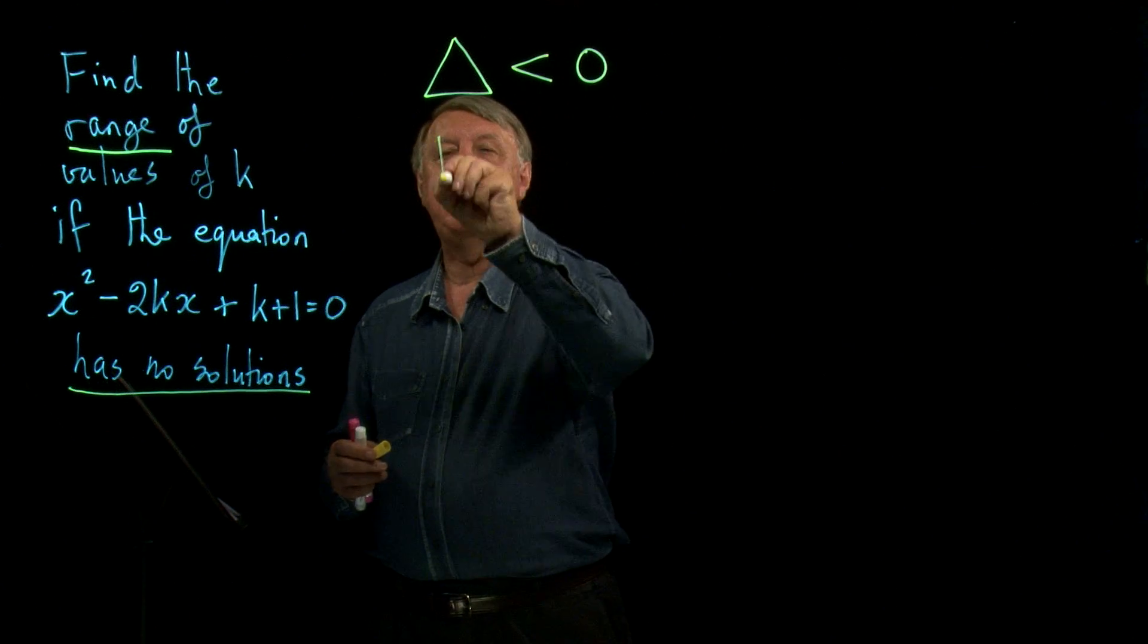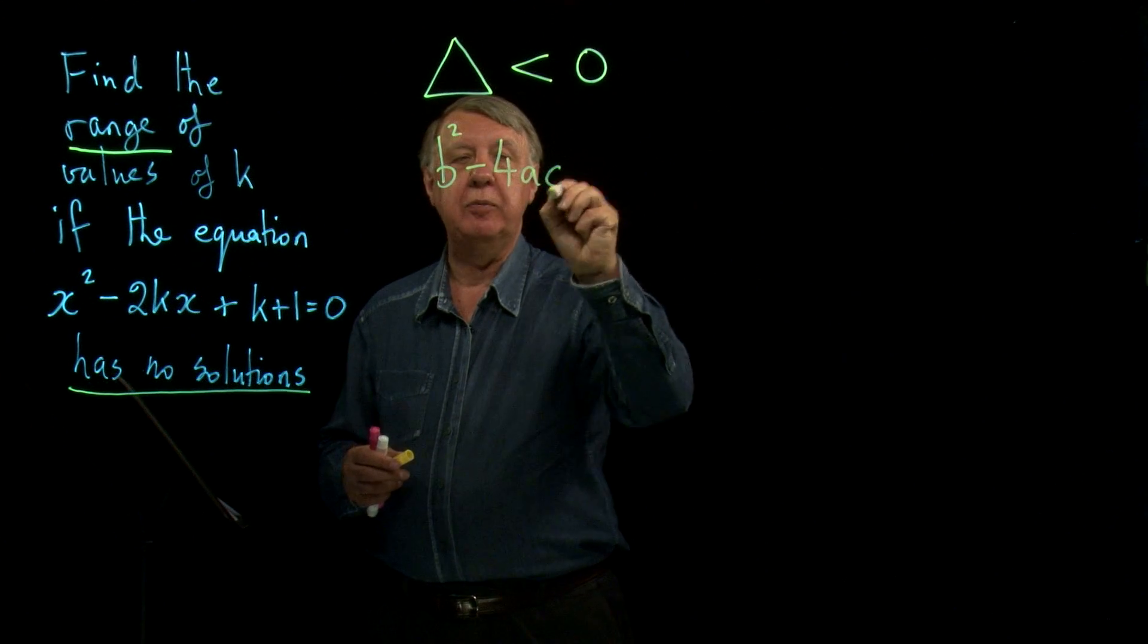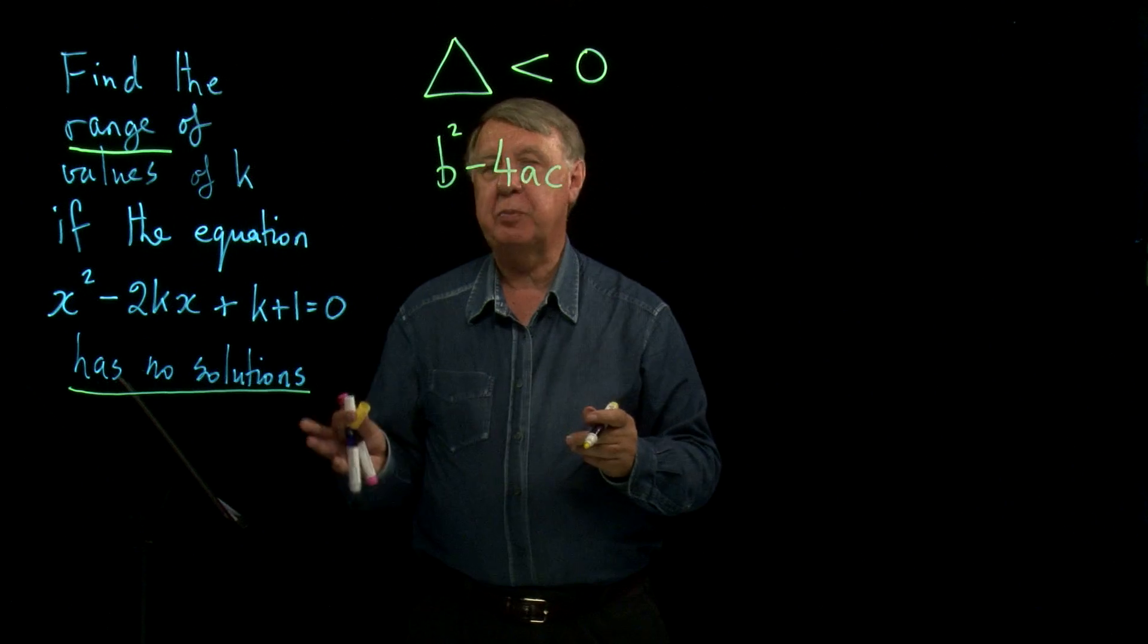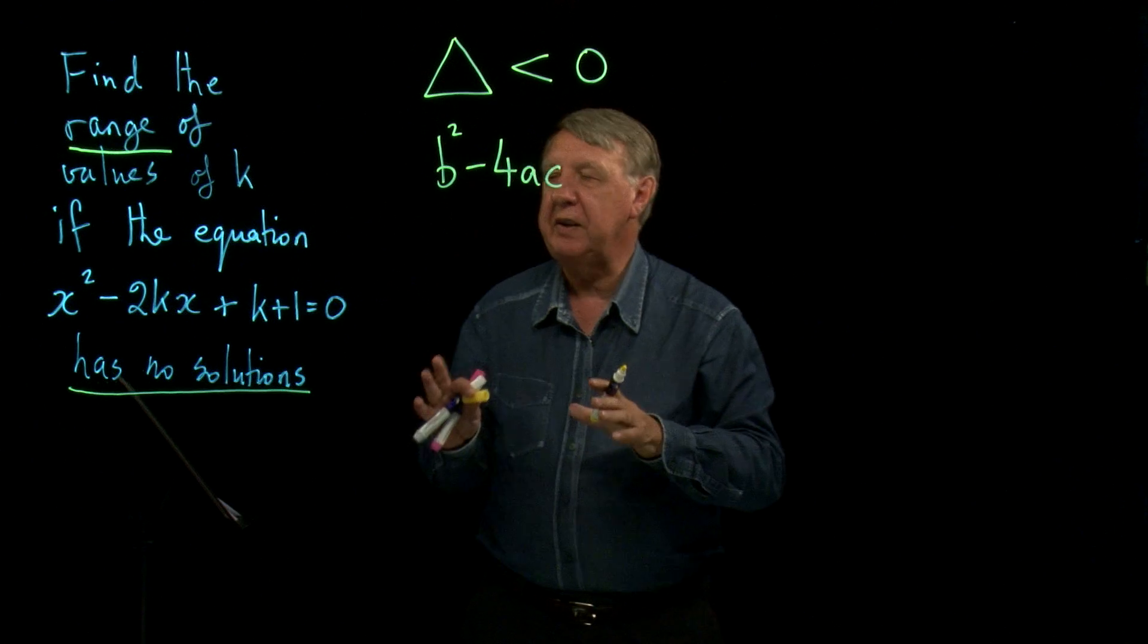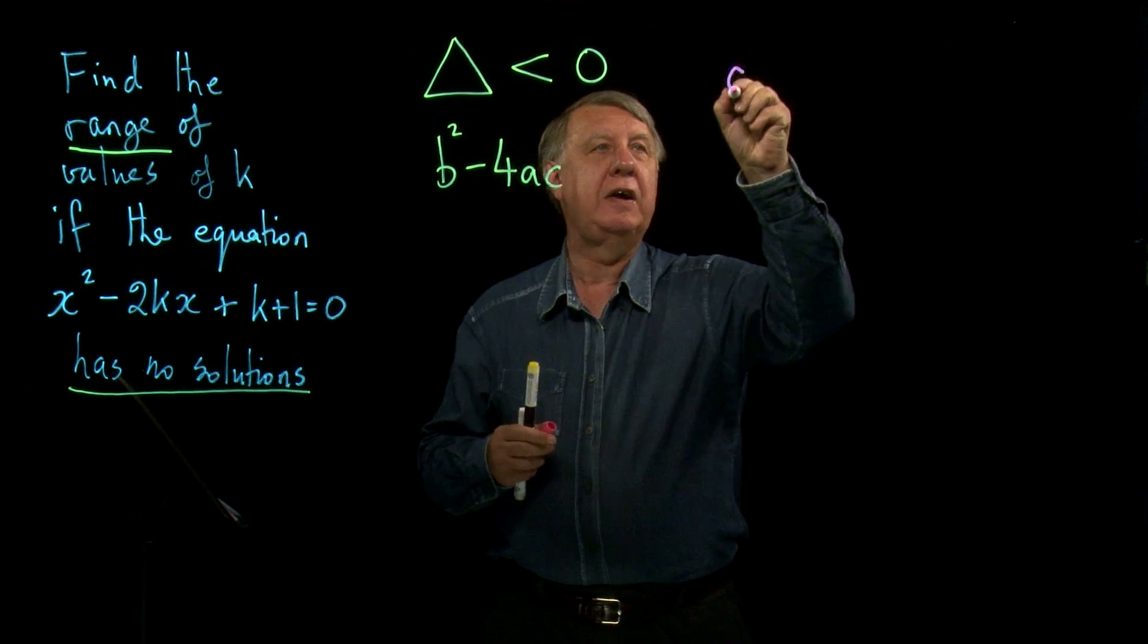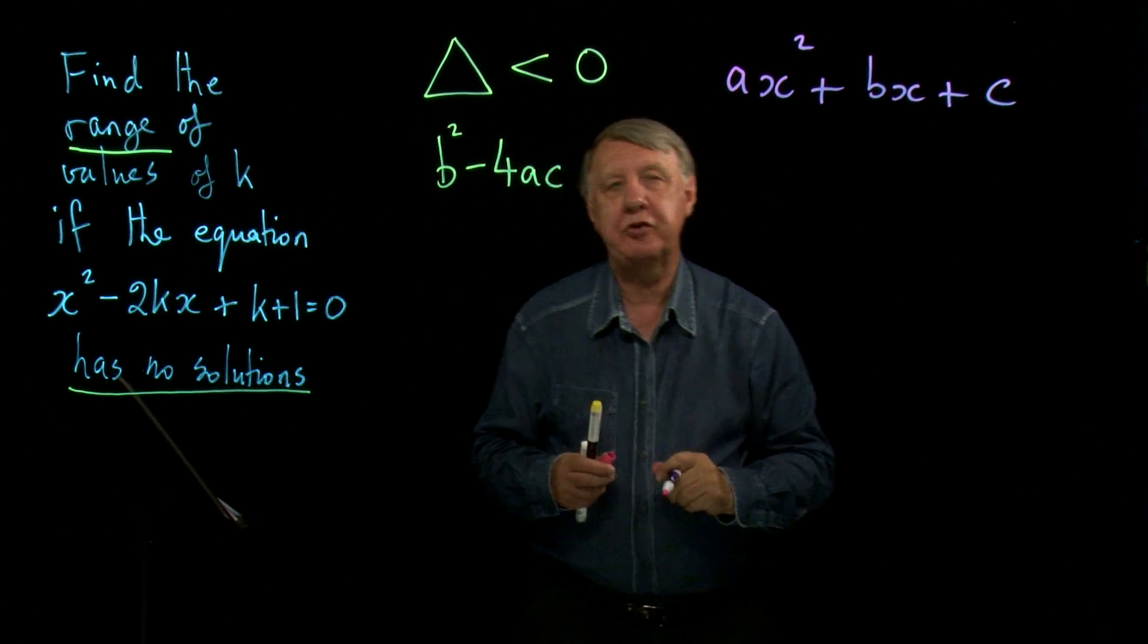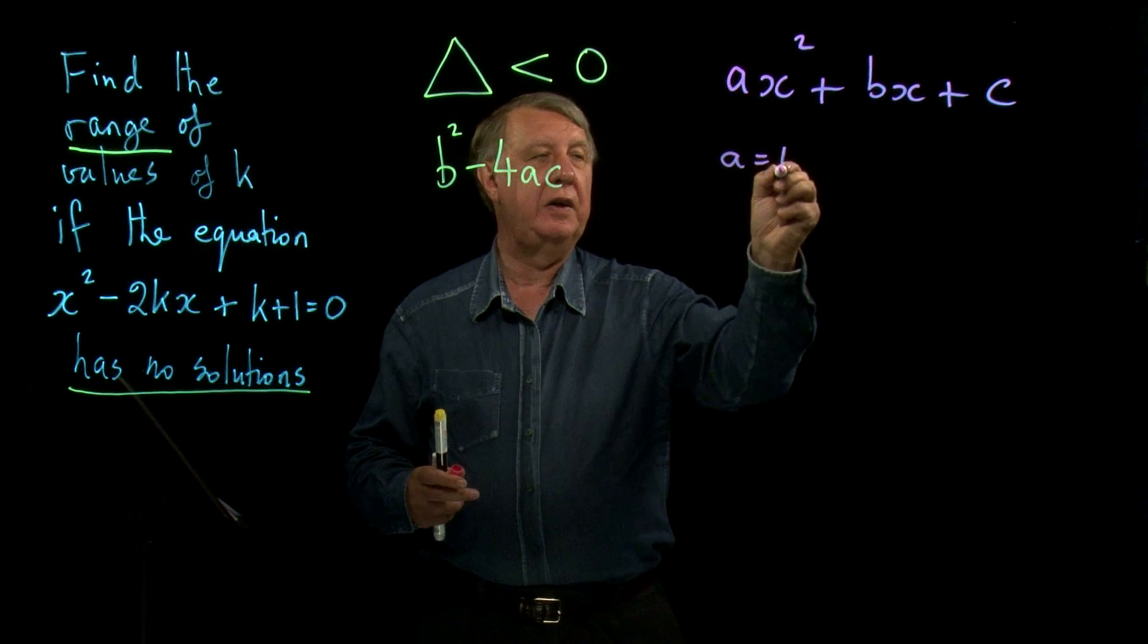How do we use the discriminant? Well we know the discriminant is b squared minus 4ac. So therefore I need to know what a, b and c are. You might think oh that's pretty easy. But again because of the mixture of k's and x's here you have to be very very careful. So let's just think of our function a x squared plus bx plus c. So a is the coefficient of x squared. Well that's easy isn't it because a is clearly 1 here.